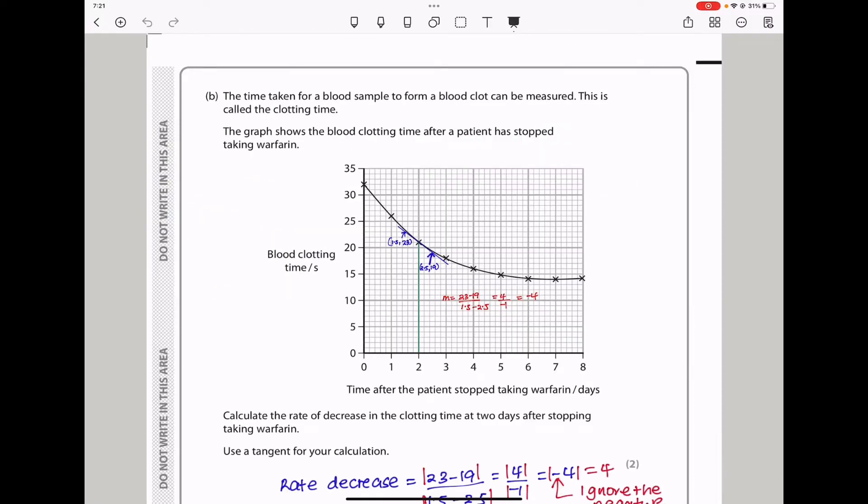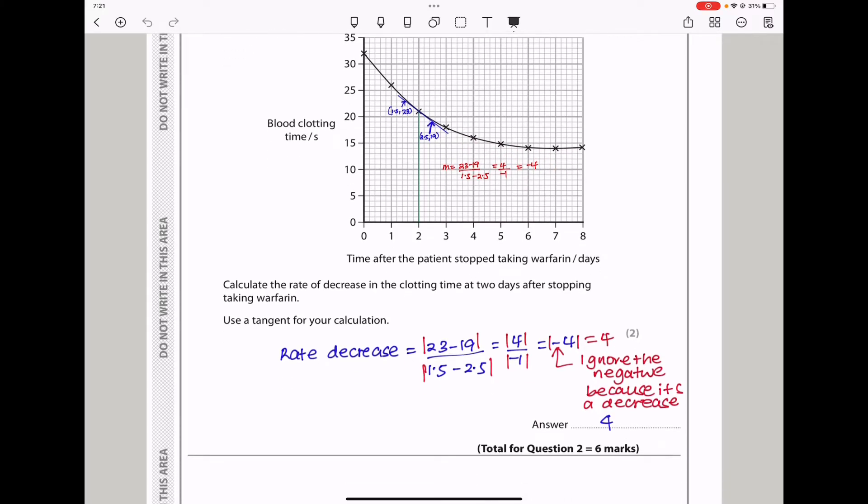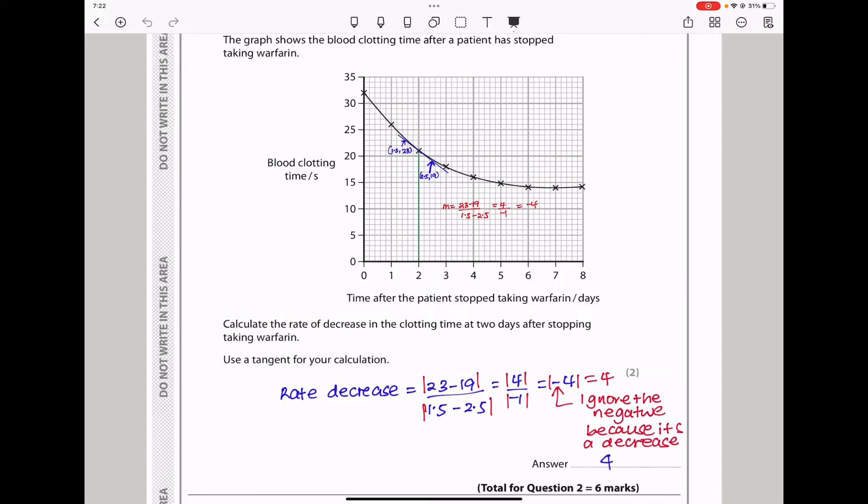The time taken for a blood sample to form a blood clot can be measured. This is called the clotting time. The graph shows the blood clotting time after a patient has stopped taking warfarin. So from the graph, we can see the blood clotting time is going to be decreasing. However, it decreases in a curve form. So the question says calculate the rate of decrease in the clotting time at two days after stopping taking warfarin. They want us to use a tangent for our calculation. So you should come at two days and then draw a tangent to the curve at that specific time, and then we find the gradient of that tangent.